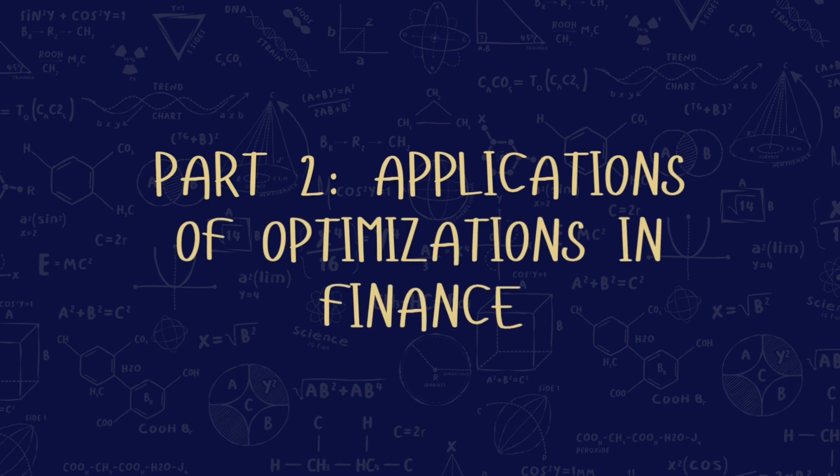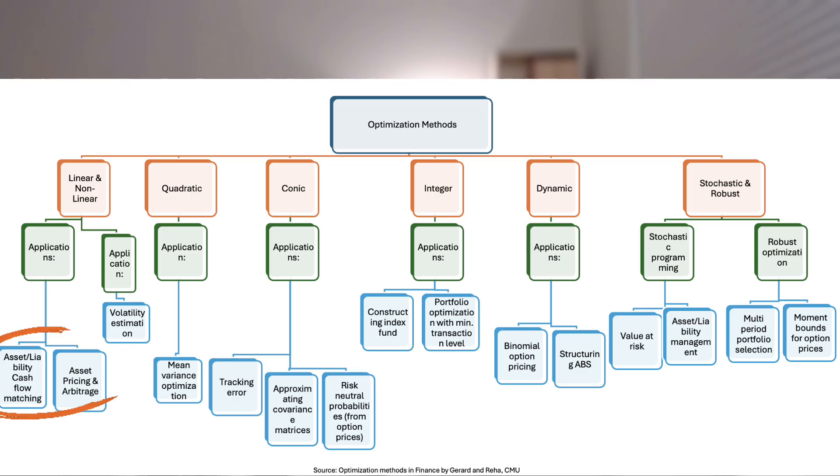Now let's look at each optimization from a finance application perspective. Linear programming handles problems where the goal and every rule are straight-line additions — like filling a shopping cart where each item has a price and nutrients, and you want the cheapest list that still hits every nutrient target. In finance, think of cash flow matching: you tell the solver the exact liabilities you must pay each year and the prices of bonds you can buy, and it picks the cheapest bond mix that covers every payment.